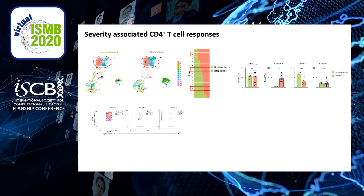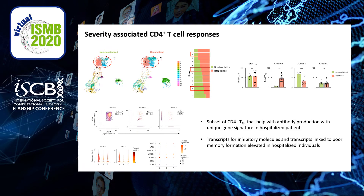Looking at the transcriptome in more detail, we noticed that cluster 6 expressed high levels of transcripts encoding for cytotoxic proteins, as shown here by the co-expression of perforin and granzyme B, but also high levels of transcripts encoding inhibitory cell surface molecules and proteins linked to poor immune function.